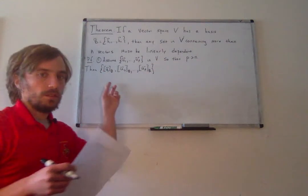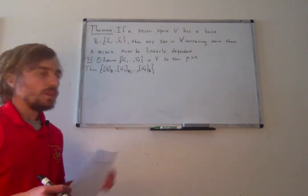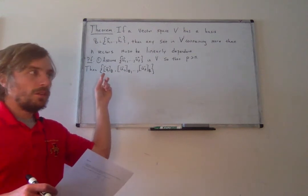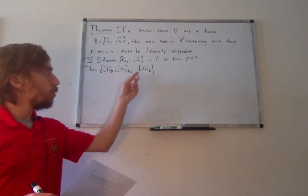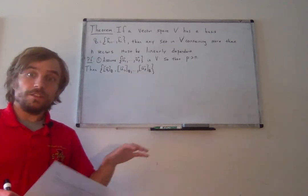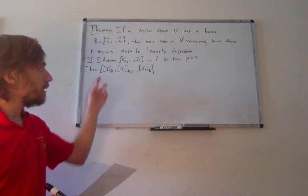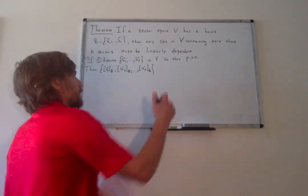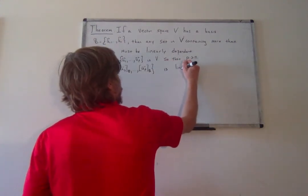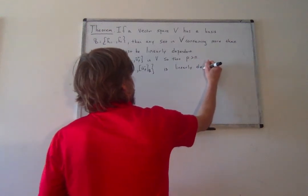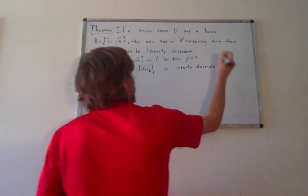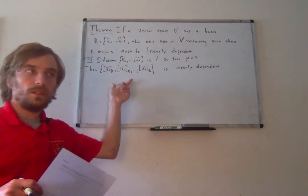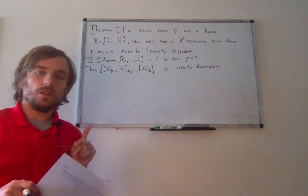This set is a set of more than n vectors in Rn, because the coordinate representations of these vectors all live in Rn. So I've got more than n vectors of length n in Rn. This means this set is linearly dependent. But notice that doesn't necessarily imply quite yet that the original set is linearly dependent — we know their coordinate representations are linearly dependent, but we don't know about the original set quite yet.